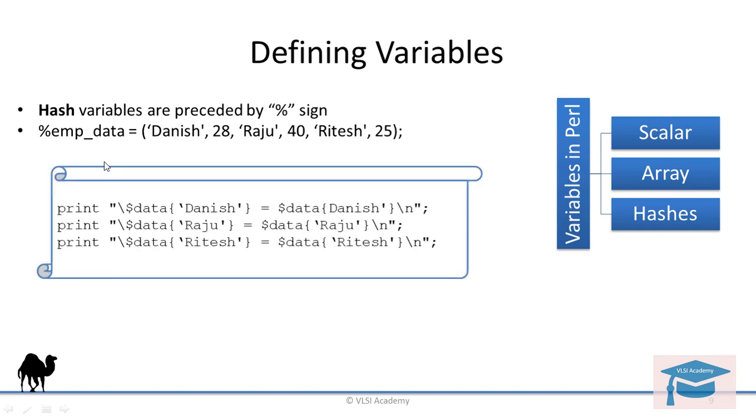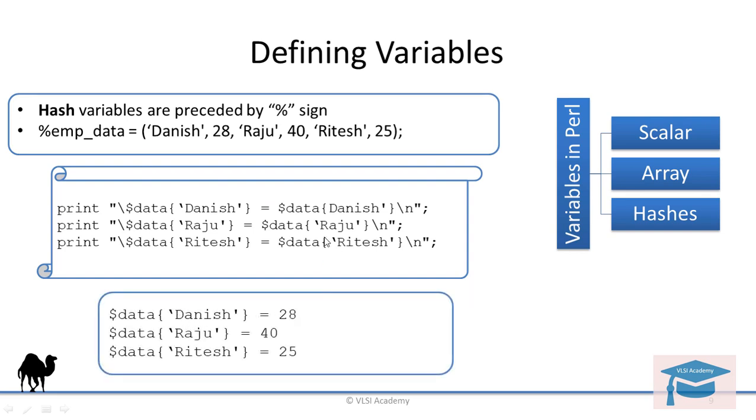To access the hash, you have to print them like this. $data{danish}, where danish is the key, will give you the value 28. We access value of hash very similar to the way we access value in normal array, but instead of index, we have to specify the key for which you want to get the value. Output of this code will look something like this. $data{danish} is equal to 28, this is evaluated and the corresponding key gives this value. Raju is the key for which the value is 40, so that will be printed. And Ritesh is the key and 25 is the value. But if you notice this backslash, it will again serve as an escape sequence. So this dollar is printed as it is and will not be evaluated. But here there is no escape sequence and it will be evaluated properly.